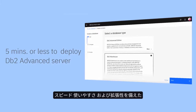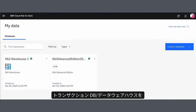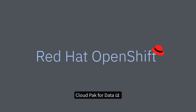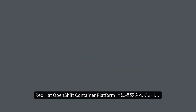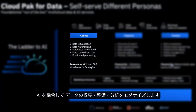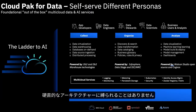The fast, easy-to-use, and scalable transactional or data warehouse can be deployed in just a few clicks. We offer a deployment experience integrated within Cloud Pak for Data, which is built upon Red Hat OpenShift Container Platform. It infuses AI and modernizes how you collect, organize, and analyze data, all without being tied to rigid architectures.